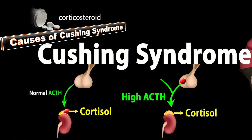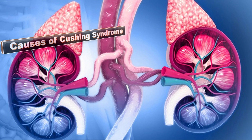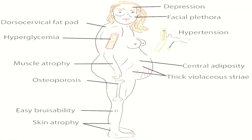Causes of Cushing syndrome: first, excessive ACTH — in approximately 70% of patients, Cushing syndrome results from excessive production of corticotropin and subsequent hyperplasia of the adrenal cortex. In the remaining 30% of patients, Cushing syndrome results from a cortisol-secreting adrenal tumor, which is usually benign.